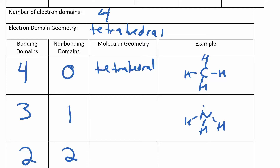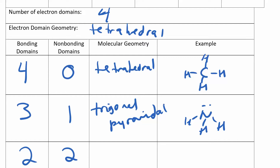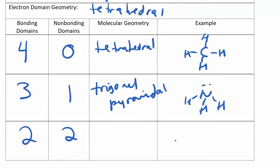If I have three bonding, this is like NH₃. When you do the Lewis structure you realize you have a lone pair up here — two non-bonding electrons. I still have one, two, three bonding plus one non-bonding, which counts as four electron domains. That's why I'm in the tetrahedral electron domain geometry. This molecule is called trigonal pyramidal. The last case is something like water — two bonding and two non-bonding — and this is also called bent.